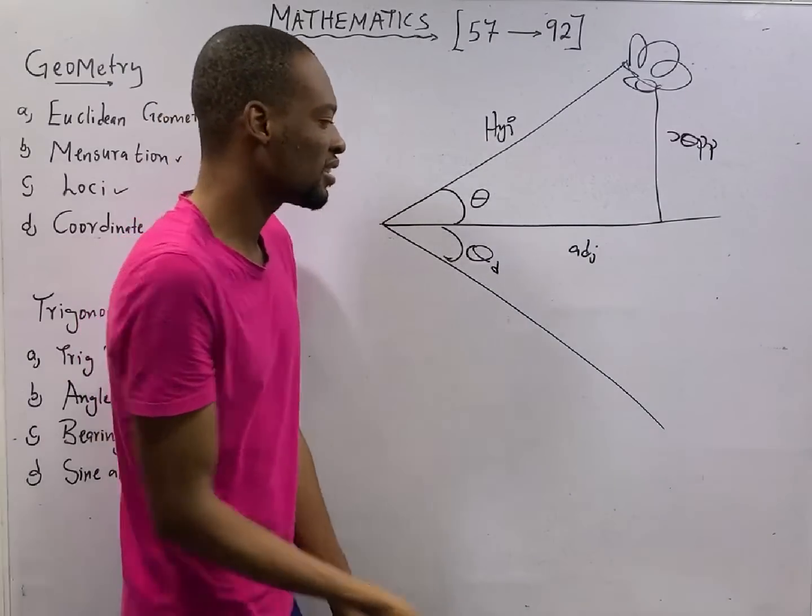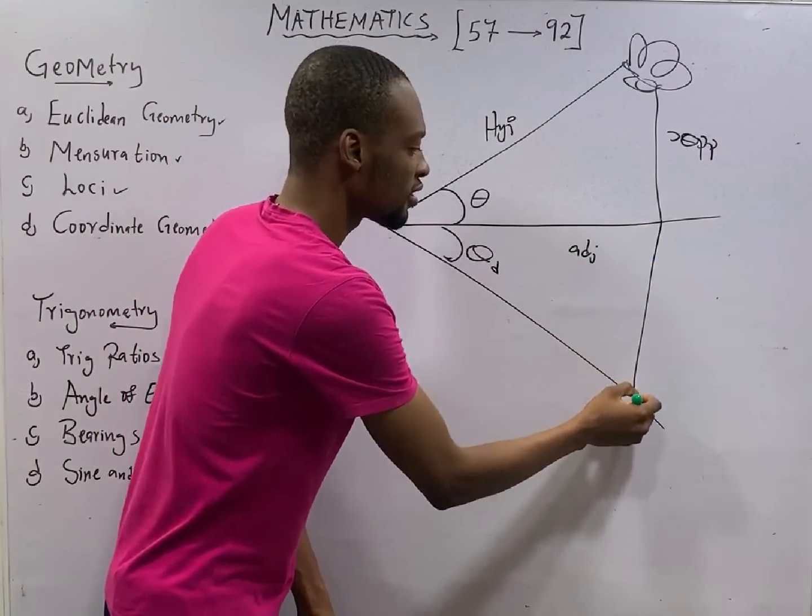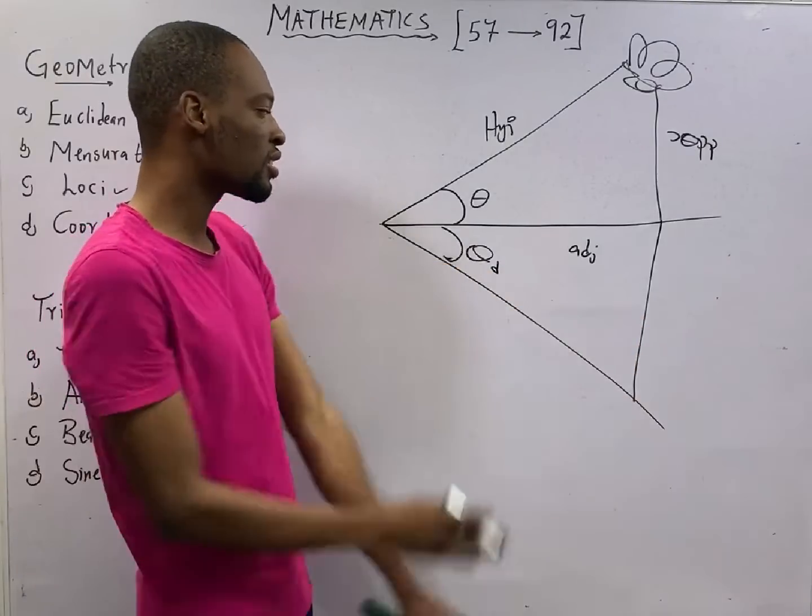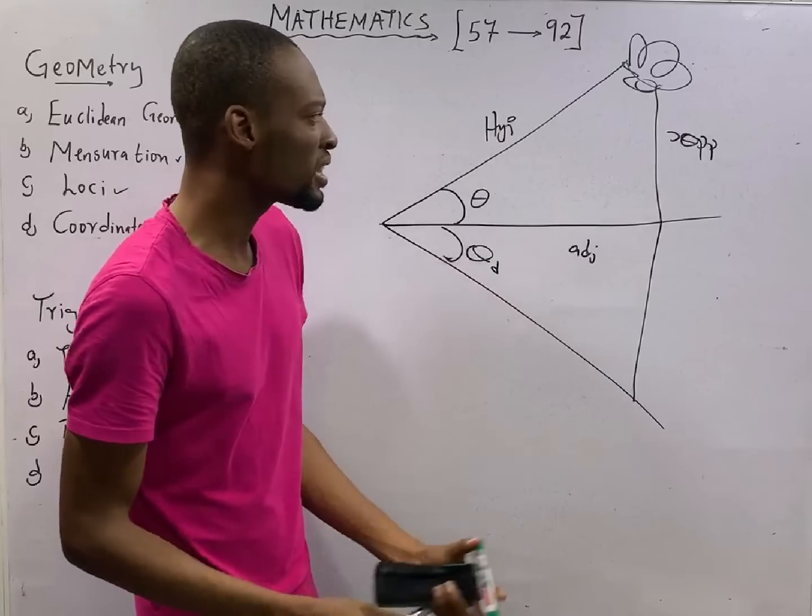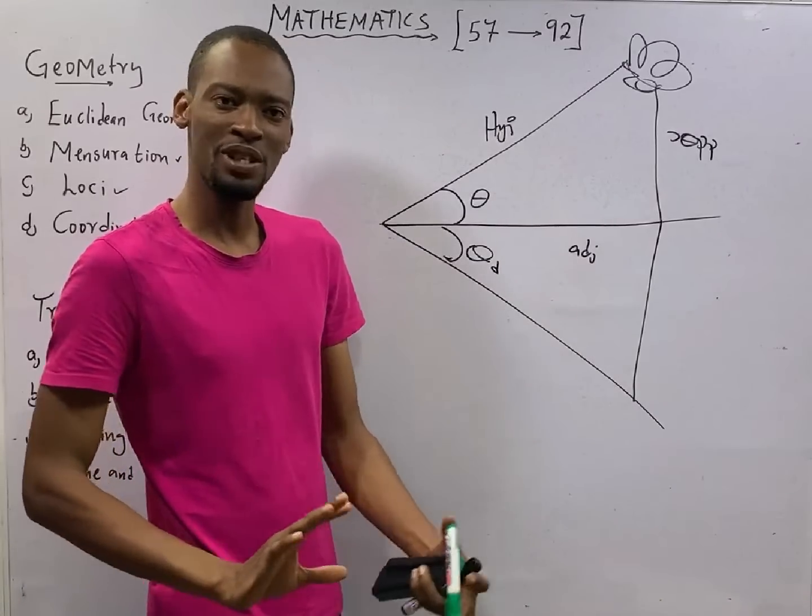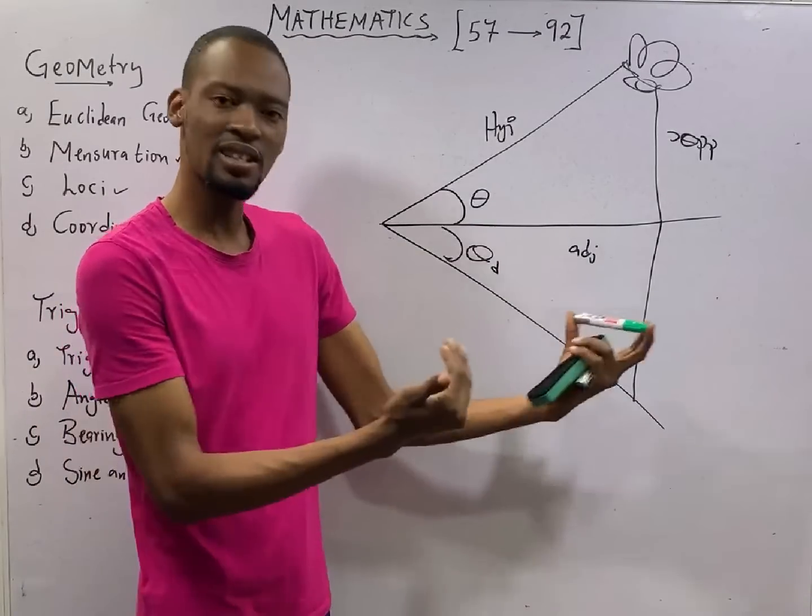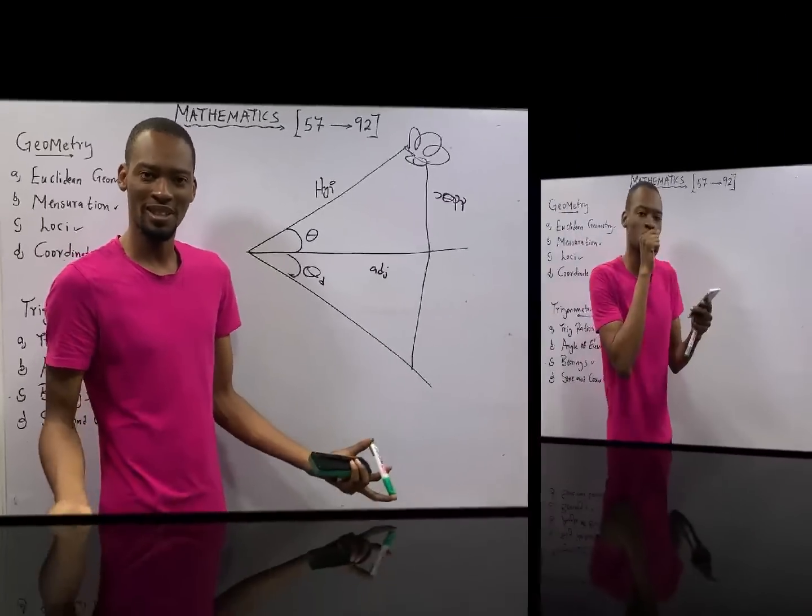And similarly, you have to cross here. This is your opposite, this is your hypotenuse, this is your adjacent. So angle of elevation and depression, they basically require the same skill and they are basically the same thing. Now let's see questions to address my point.